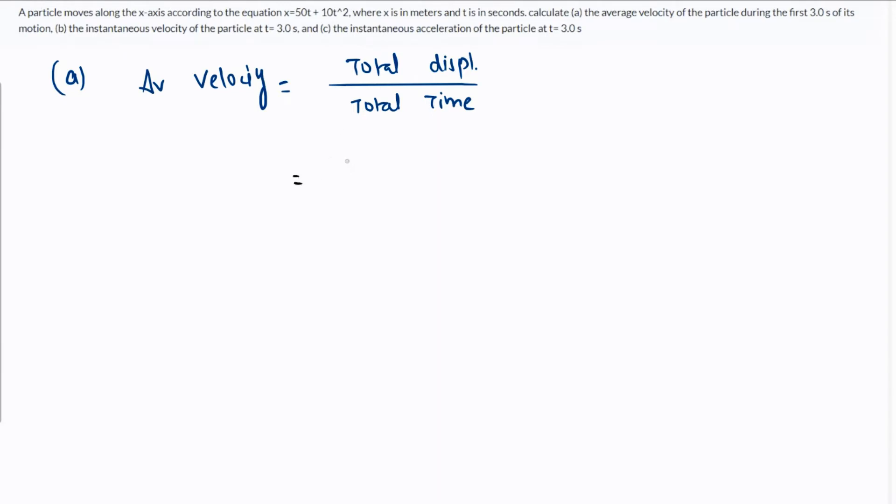The final distance at t=3 is x = 50 times 3 plus 10 times 3 squared, and the initial at t=0 is 0, over the time of 3 seconds. This value comes out as 80 meters per second.